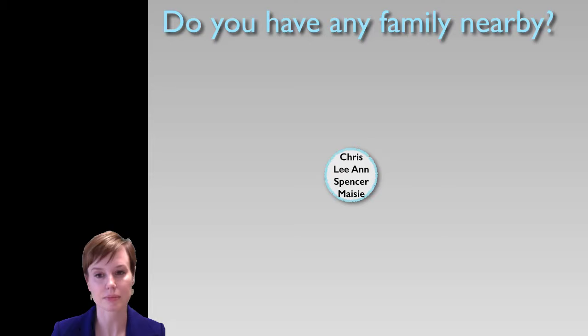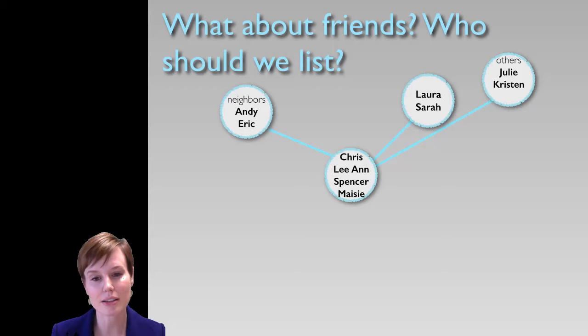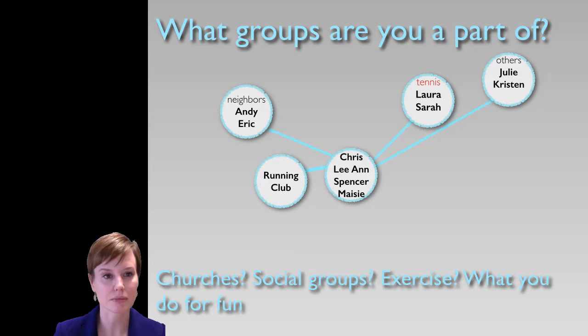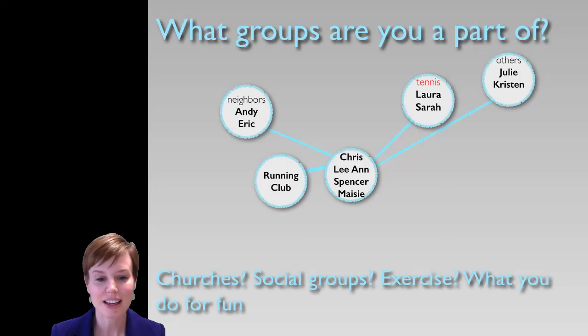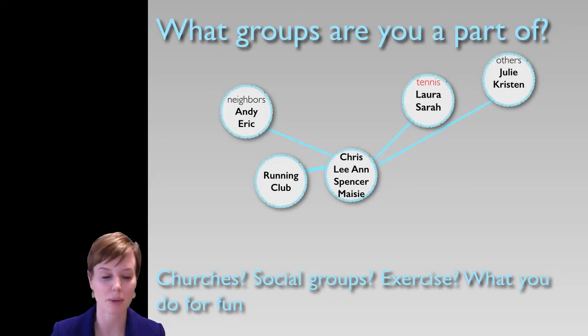Next we can ask: what about your friends? Who should we list as friends for everyone in your family? In my family, for Chris my husband, we would list a couple of our neighbors as his friends. For me, we would list a couple of my friends from tennis as my main friends, and a couple of other friends who don't live in my town. Then we can ask families about all the groups they're a part of — social groups, religious groups, health groups, any recreational activities — and give a circle for each type of group.